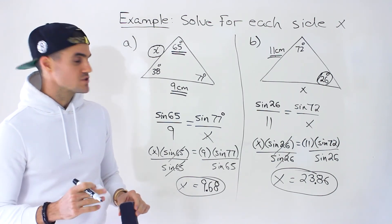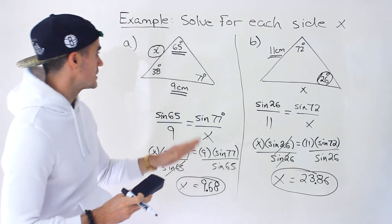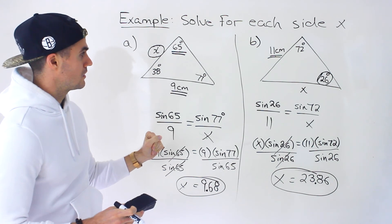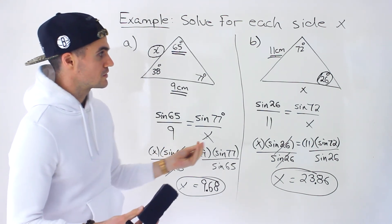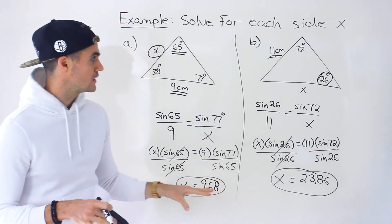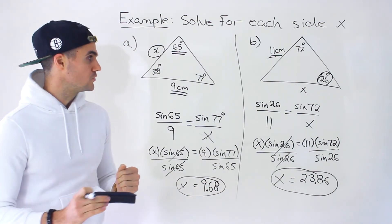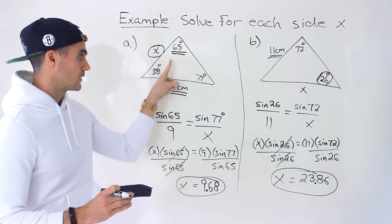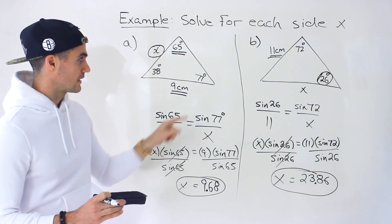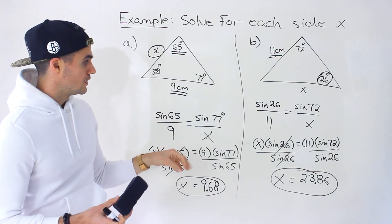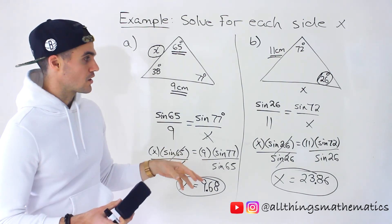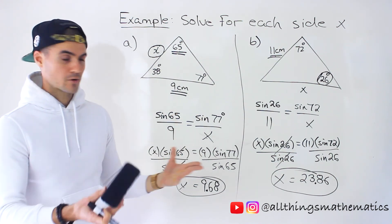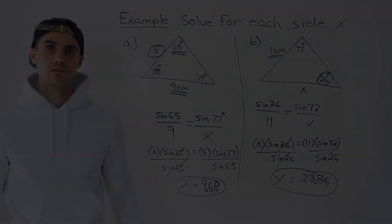So again, whenever you see a non-right angle triangle and you see an angle given with the opposite side given, you're pretty much going to be using sine law to solve for whatever variable you need — sometimes side lengths like in this video, sometimes angles. Always be on the lookout for that scenario: an angle and the opposite side given. And remember, sometimes you have to do some preliminary work. Whenever you're solving for variables it's not always done in one step like part B; sometimes you have to find other parameters of the triangle first.